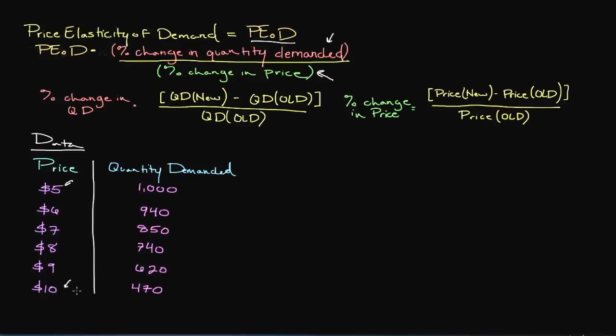So we are going to go ahead and work through this problem here given the data that I have of course created. So the first thing we are going to do is we are going to calculate the percentage change in quantity demanded. And so the first thing that we need based on our equation is the new quantity demanded. So let me give you an example here,